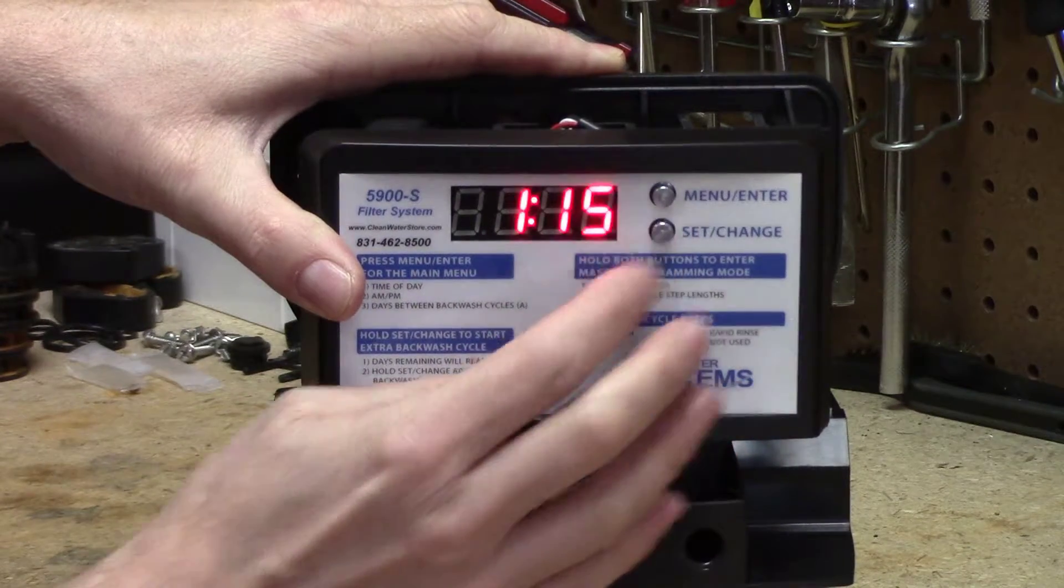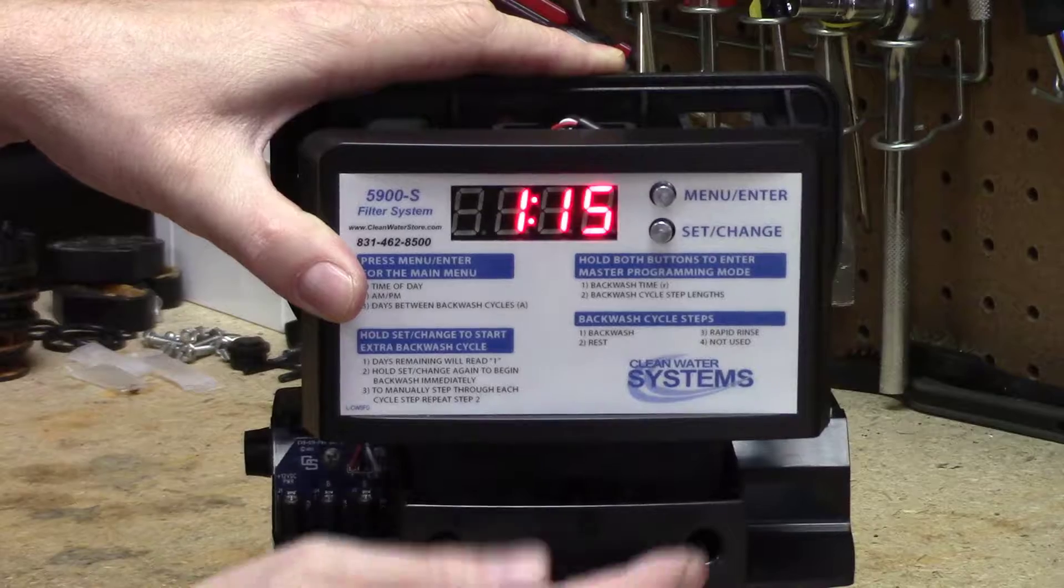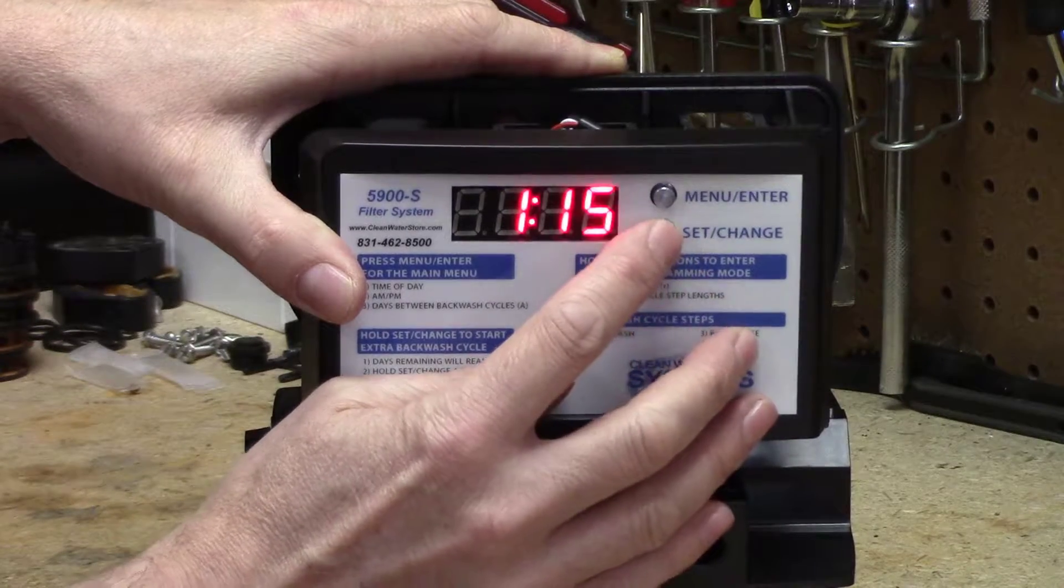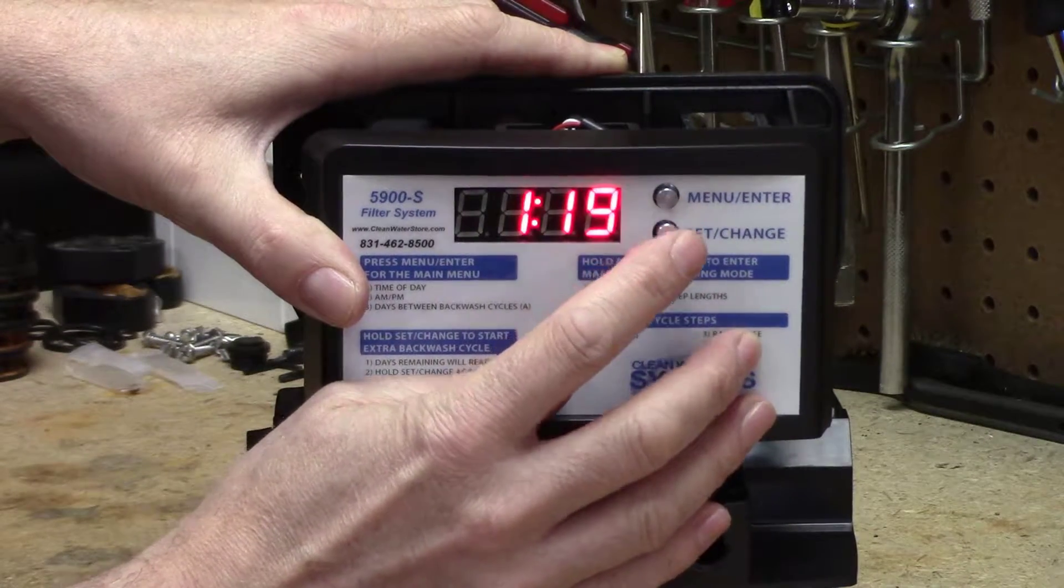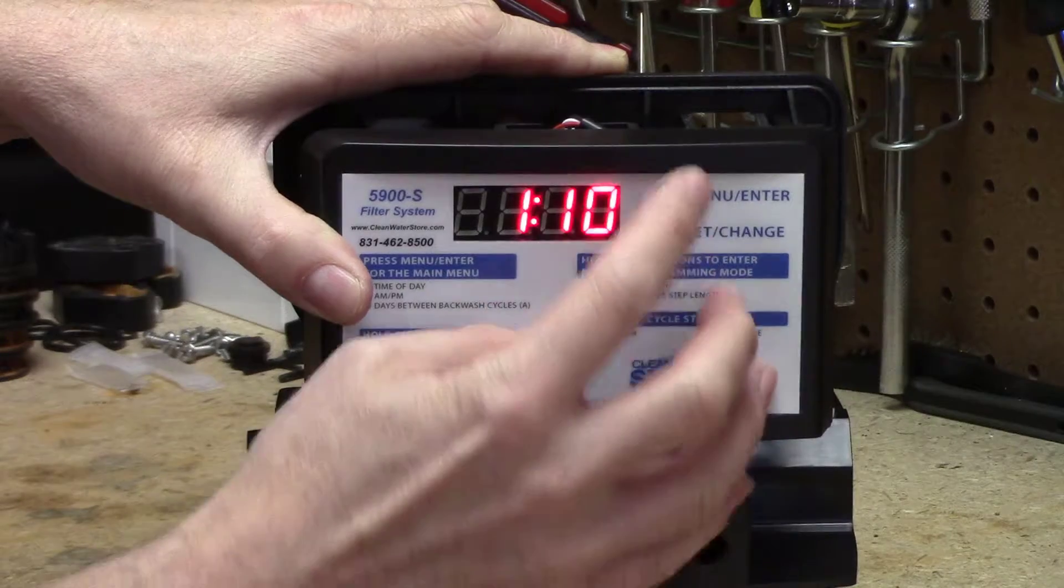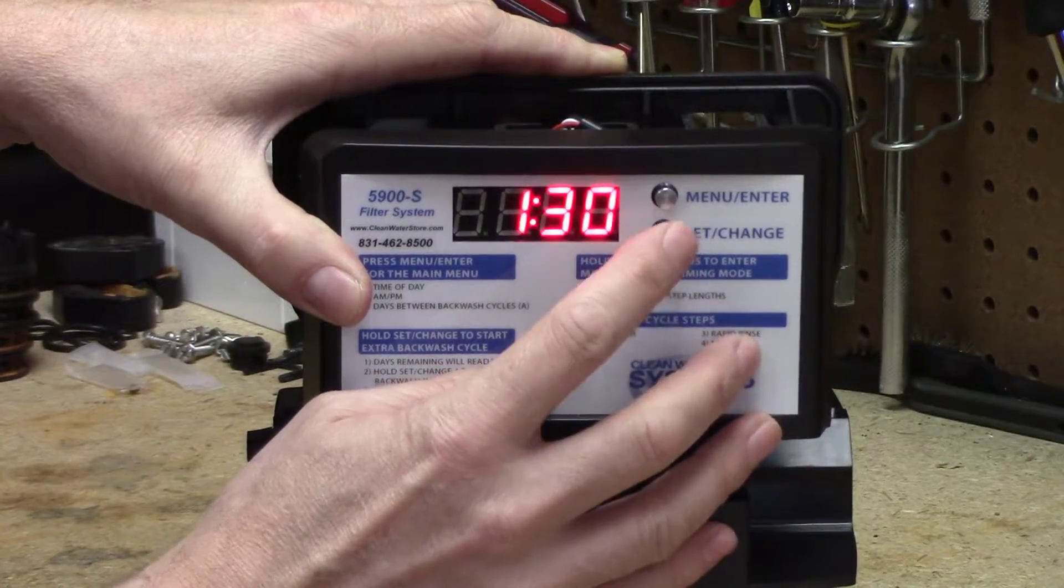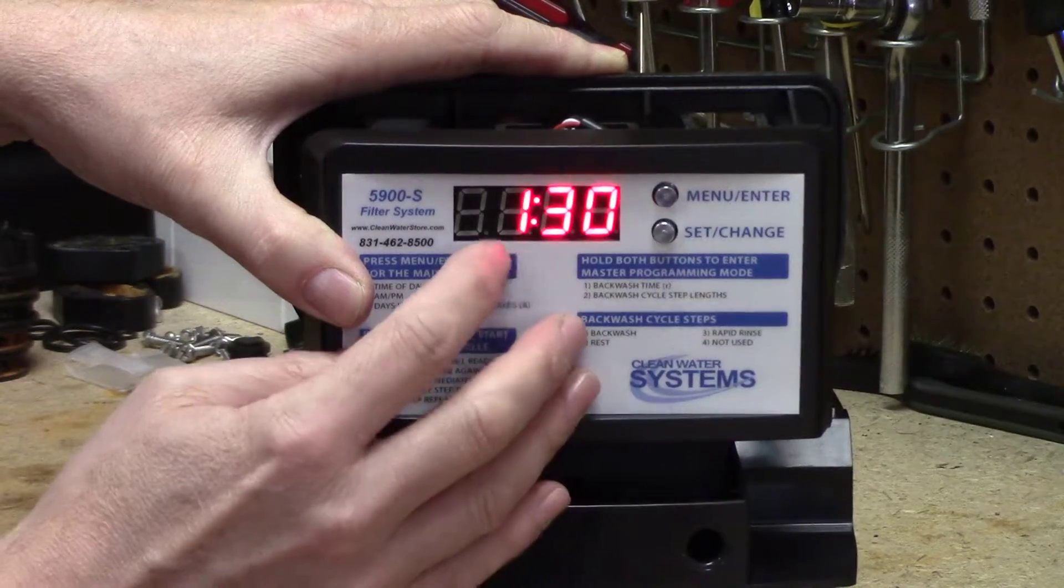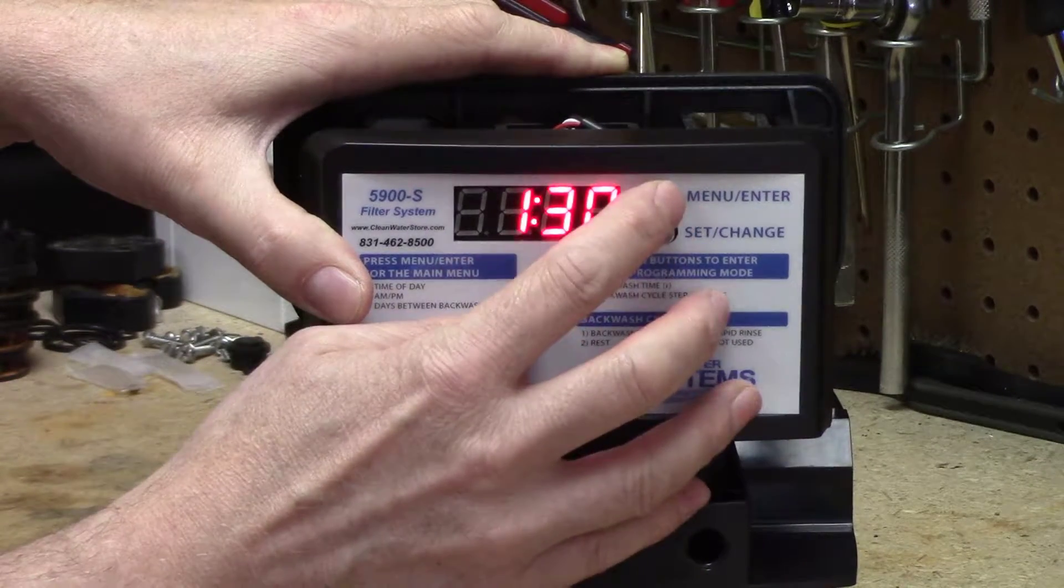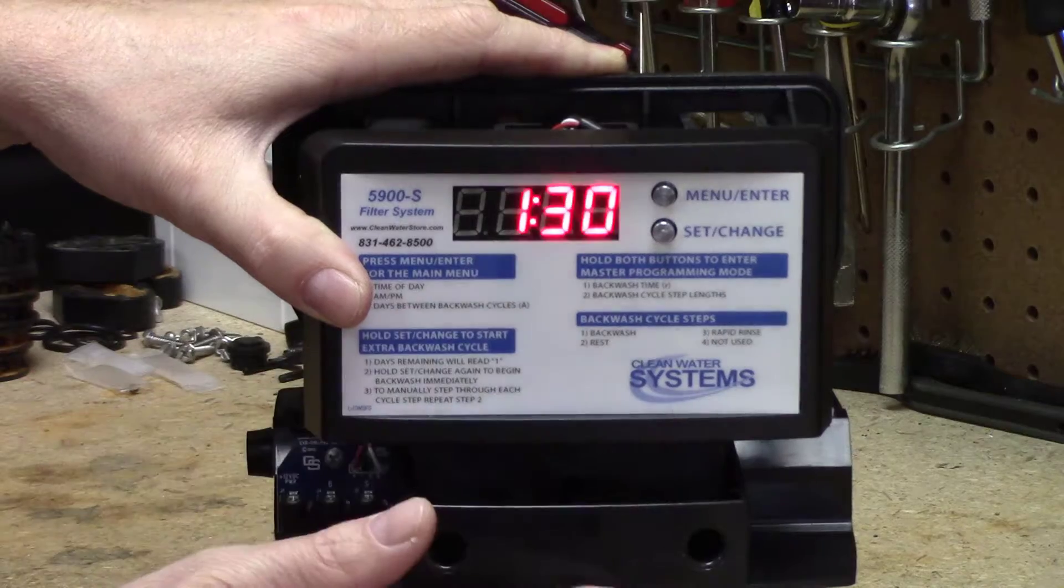So we'll press the set change button. The 5 starts blinking on and off, and now we can press the set change button again and go up to the zero for our 130. Press the menu enter, goes over to the next digit. Press the set change button—there's your 30. Over to the next one, we'll leave the one alone. And now we've got the clock time set at 130.